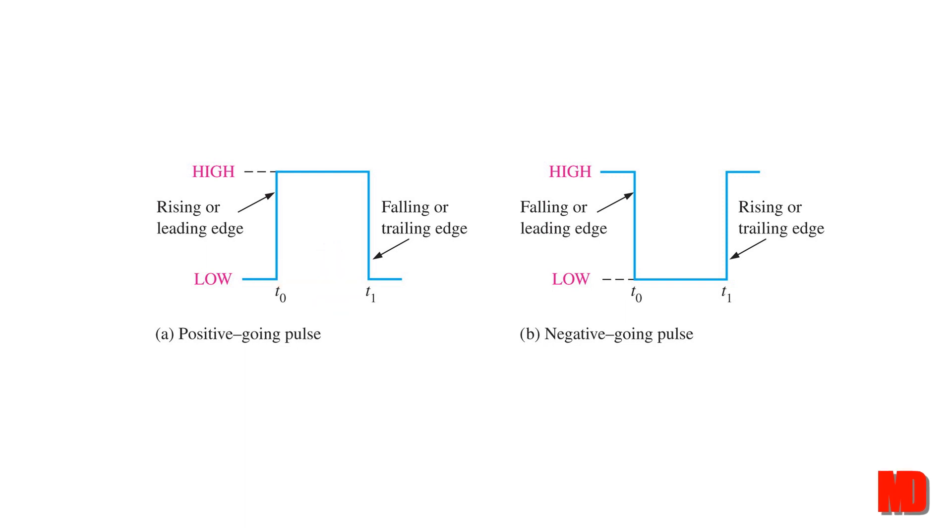Switching over to the negative going pulse, you can see that the leading edge at T0 goes from high to low, and so that is the falling edge. At T1, we have the trailing edge, but it is going from low to high. So in the negative going pulse, this is the rising edge.